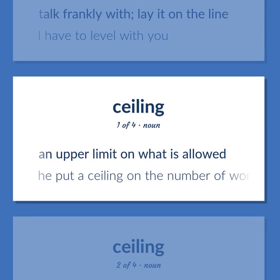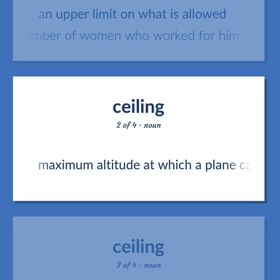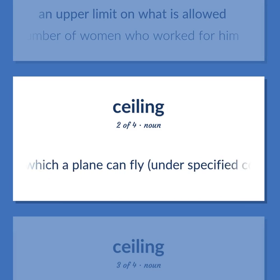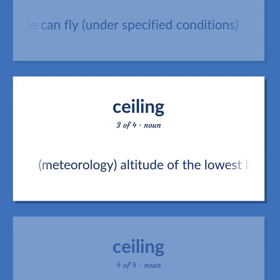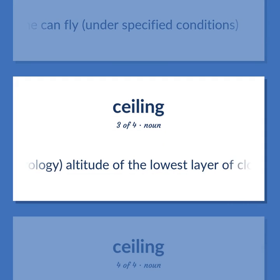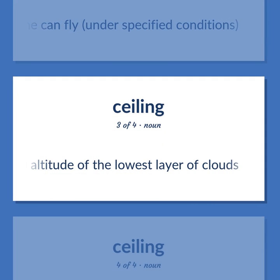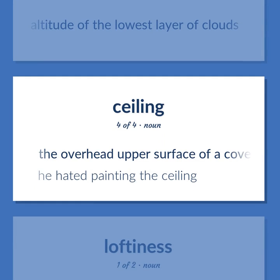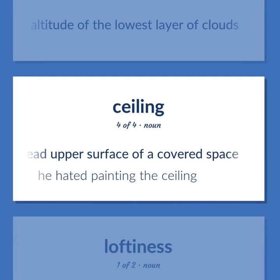Ceiling. An upper limit on what is allowed. Example: He put a ceiling on the number of women who worked for him. Maximum altitude at which a plane can fly under specified conditions. Meteorology: altitude of the lowest layer of clouds. The overhead upper surface of a covered space. Example: He hated painting the ceiling.